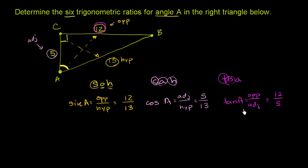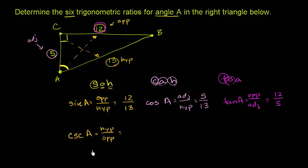Now we'll cover the other three trig ratios, which are the reciprocals of the first three. First, cosecant. It's a little unintuitive why cosecant is the reciprocal of sine even though it starts with 'co' like cosine, but cosecant of A is hypotenuse over opposite. The hypotenuse is 13 and the opposite side is 12, so cosecant of A is 13 twelfths — the reciprocal of 12 thirteenths.